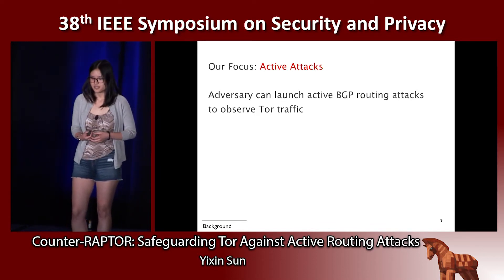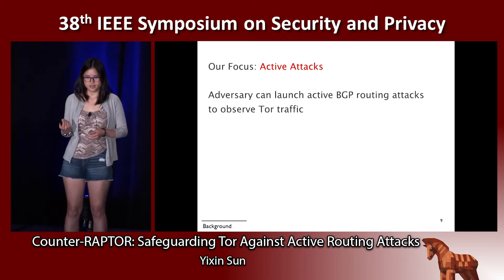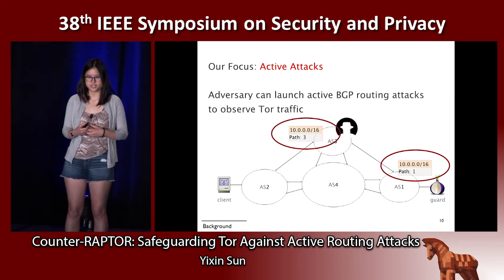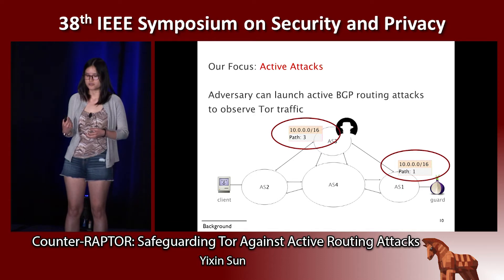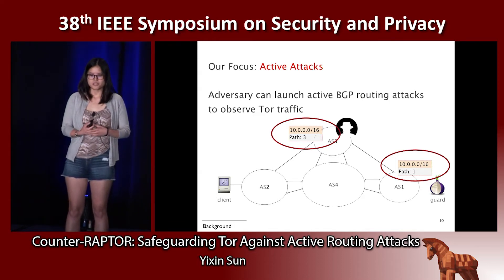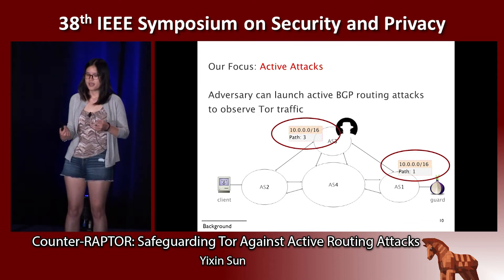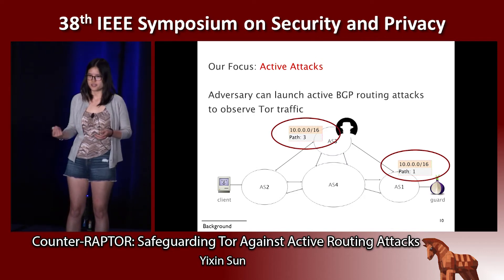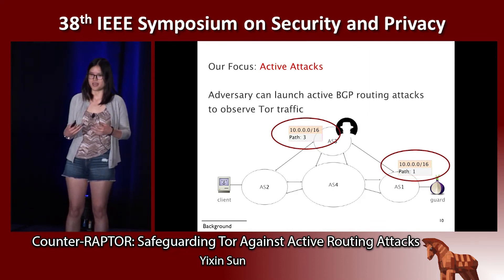These kinds of routing attacks enable on-demand and fine-grained attacks on the Tor network. Here's a simple example: in a partial internet topology, the malicious AS3 wants to observe Tor traffic going into the guard relay in AS1. So AS3 announces the same slash-16 prefix that AS1 is announcing, trying to get traffic routed to itself instead of AS1. This is a simple example of a BGP hijack.